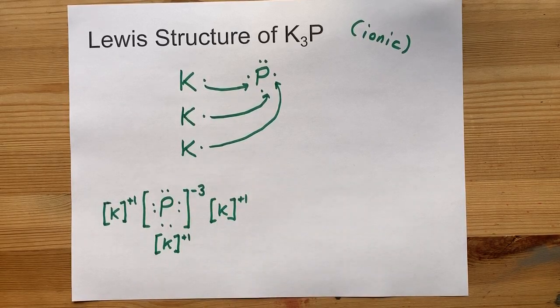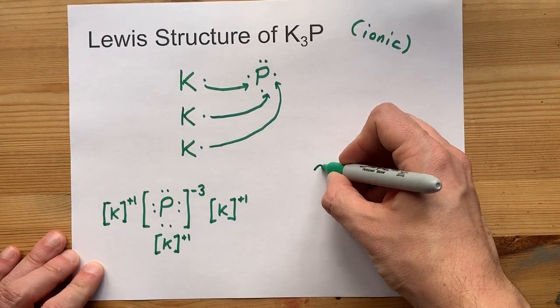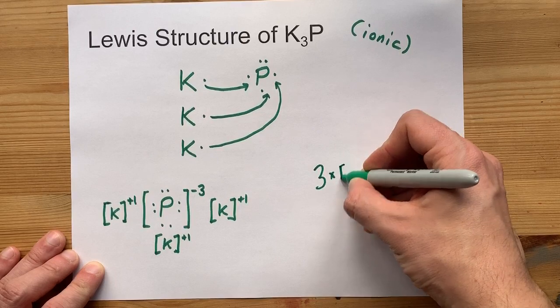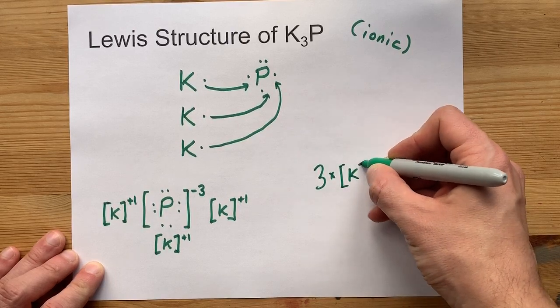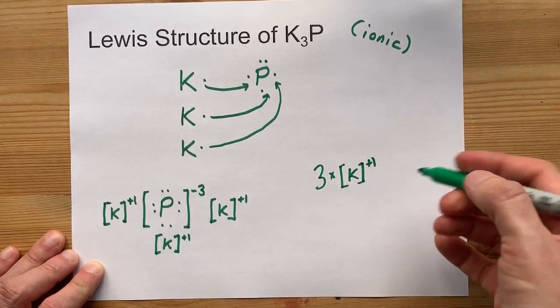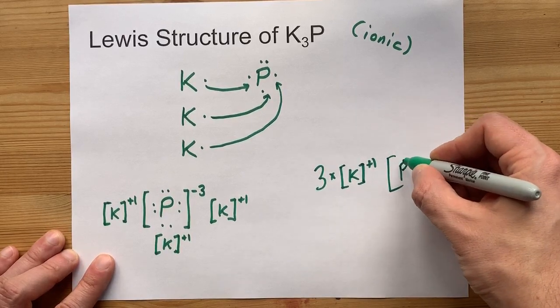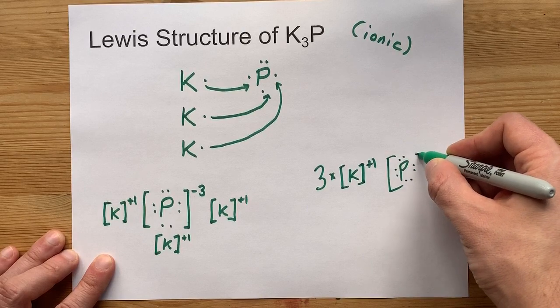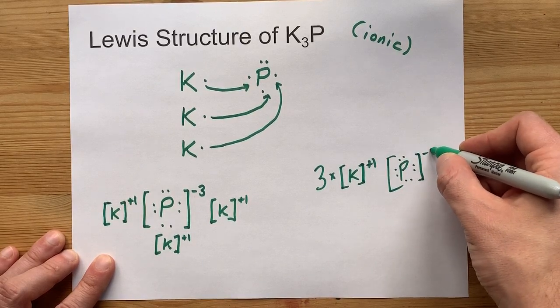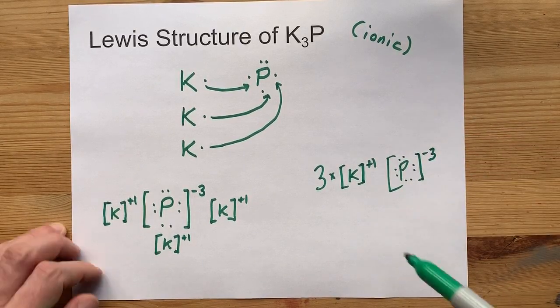Now you might be able to take a shortcut in writing the Lewis structure here. You might be able to write three times K with that plus one charge. Just saves you from having to write it three times and then also show people the eight valence electrons on phosphorus with the minus three charge.